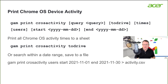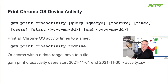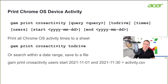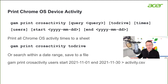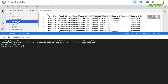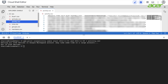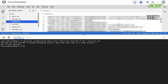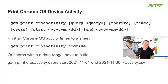If you want something more nuanced — for example, getting activity for your users within a specific date range — you would use: `gam print cros activity users start <start_date> end <end_date>`, and then pipe that out to a file, in this case called `activity.csv`.